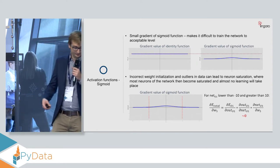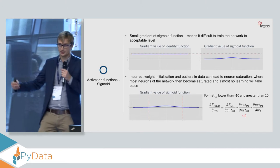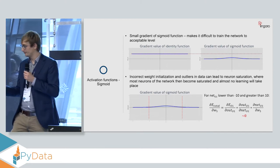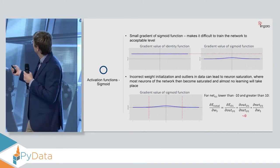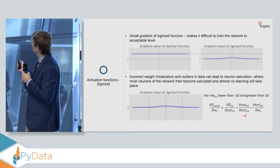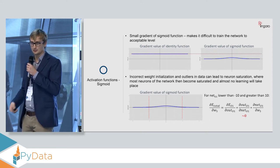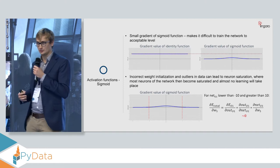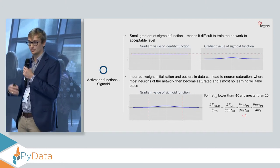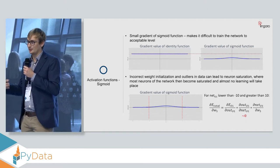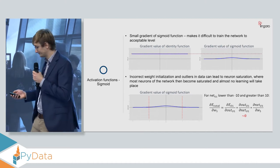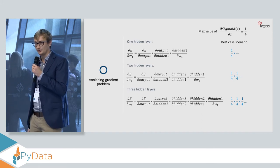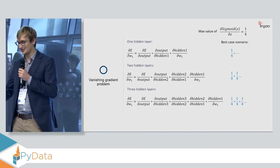And this I will elaborate more on the next slide when I will be talking about the problem of vanishing gradient. But another big disadvantage of this function is the problem of saturated neurons. So whenever we have input value of less than minus 10 or greater than 10, you can see that the gradient will be almost 0, so no learning will take place. So the neuron will become saturated, and the weights will not be updated.